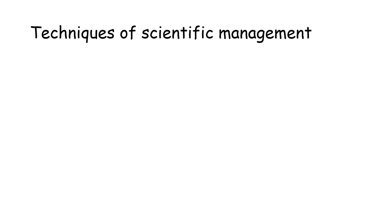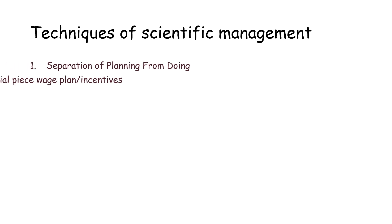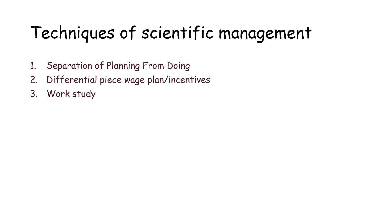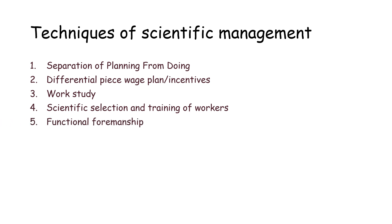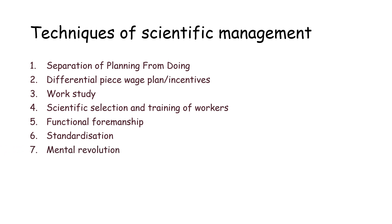Let us understand the different techniques of scientific management, also known as tools or elements of scientific management. These are: separation of planning from doing; differential piece wage plan; work study; scientific selection and training of workers; functional foremanship; standardization; and mental revolution.